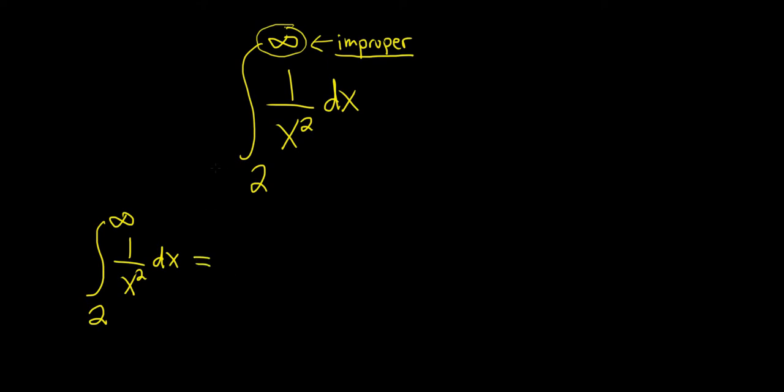Next thing we'll do here is replace the infinity with a variable. So we're going to go from 2 to b. And then what you do is you take the limit.